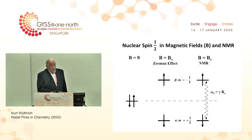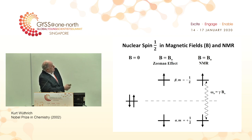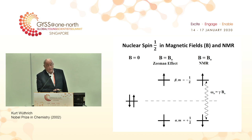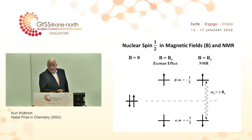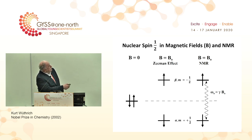This spin quantum number of one-half has two eigenstates: minus one-half and plus one-half. In the absence of a magnetic field, the two eigenstates of the spin quantum number are degenerate, and you cannot detect energy differences between them.